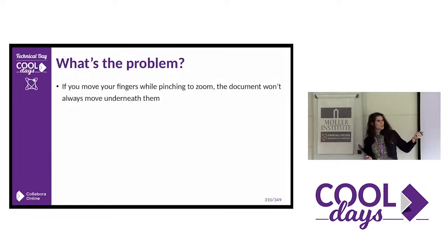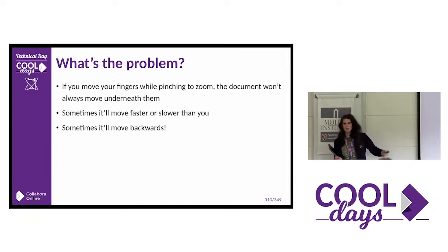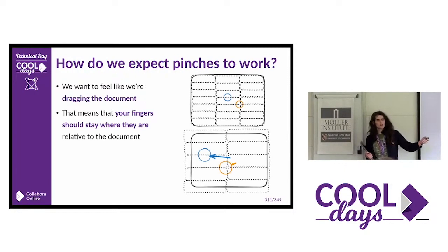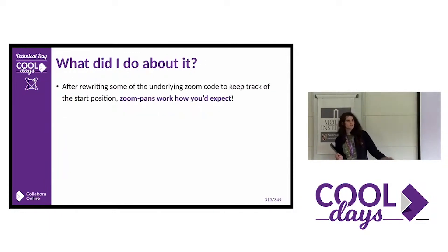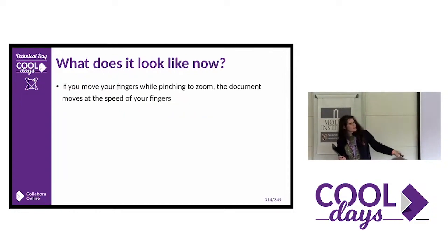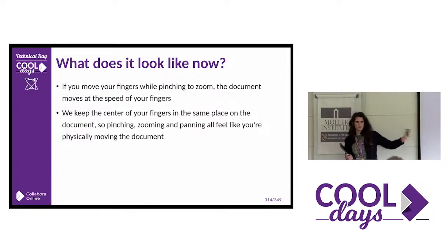Finally, pinching and panning. If you move your fingers while pinching to zoom, the document doesn't always move correctly — sometimes it'll move faster or slower, sometimes backwards. We want it to feel like you're physically dragging the document, with your fingers staying where they are. That wasn't possible because we weren't accounting for where the pinch started. So I rewrote that, and now zoom panning works as you'd expect in the next version: the document moves at the speed of your fingers and we keep the center of your fingers in the same place, so pinching, zooming, and panning all feel like you're physically moving the document.